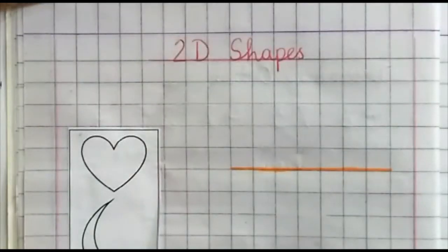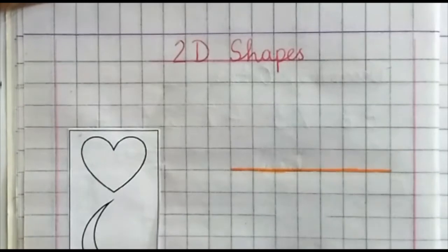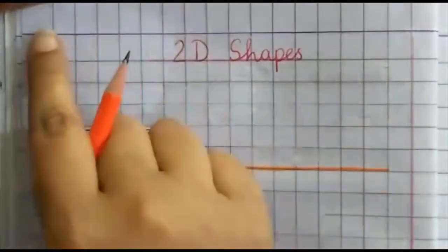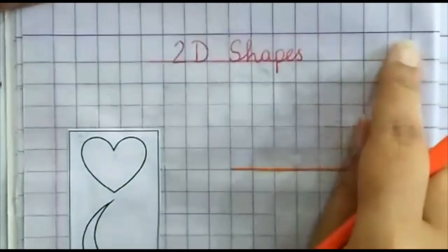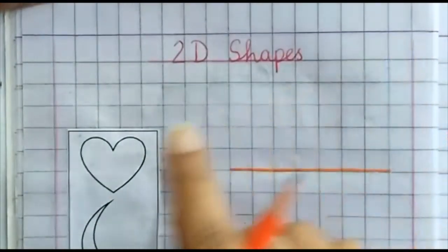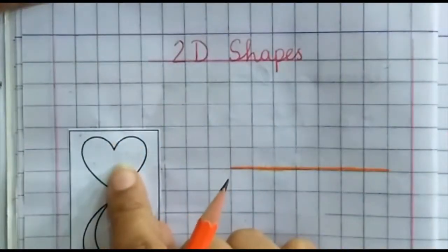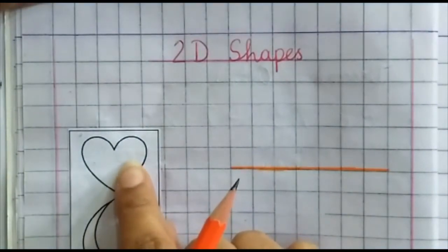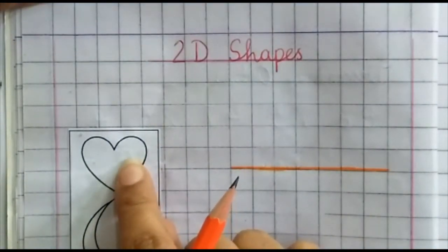Assalamualaikum. In class today we are going to do 2D shapes from second term. Now we start from here. Mention CW, date and day. Now we start — look at the first shape. This shape is heart.